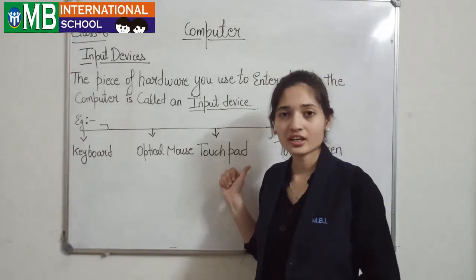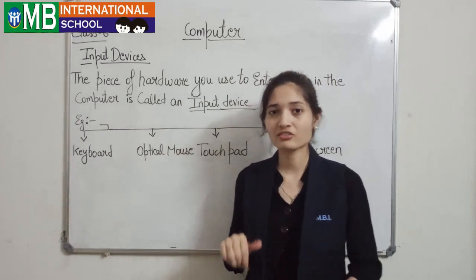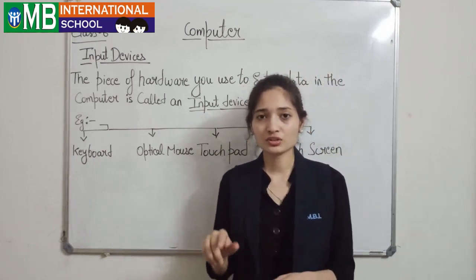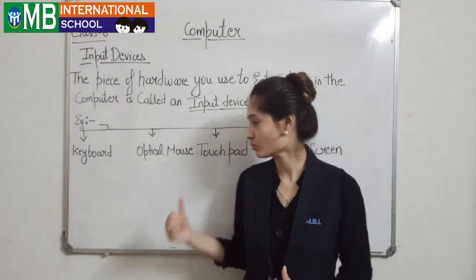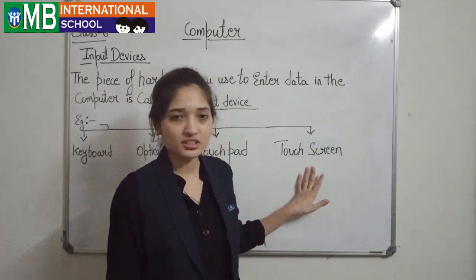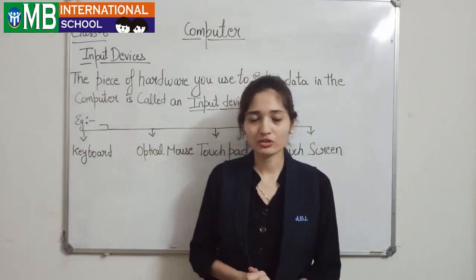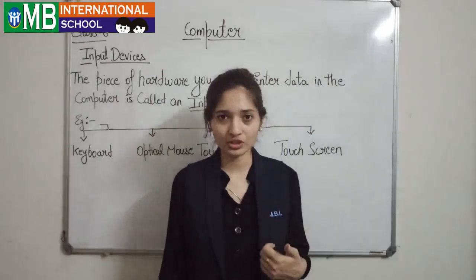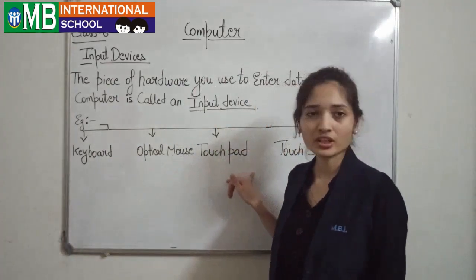Touchpad — on a laptop, where there is no mouse available, we use the touchpad to click and open icons on the computer. Touch screen — the touch screen is used in our phones, like Android phones, where we don't have a keypad. These are all examples of input devices.